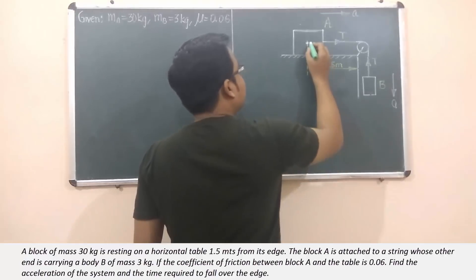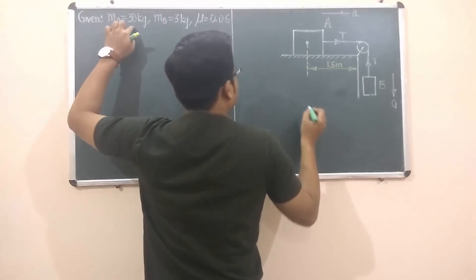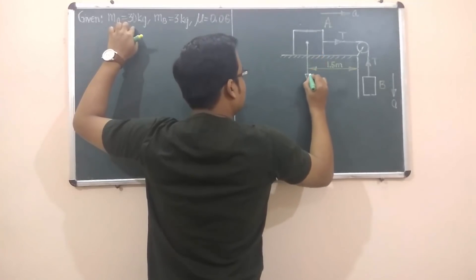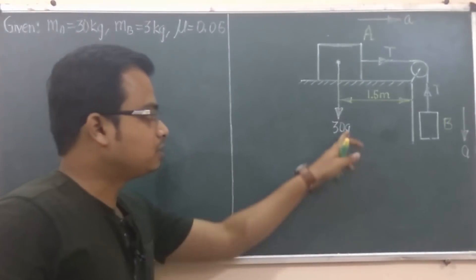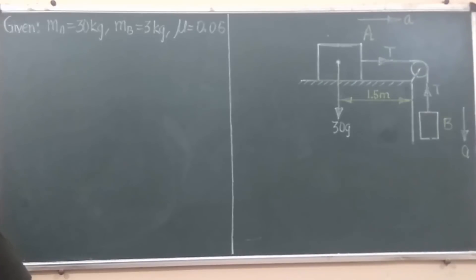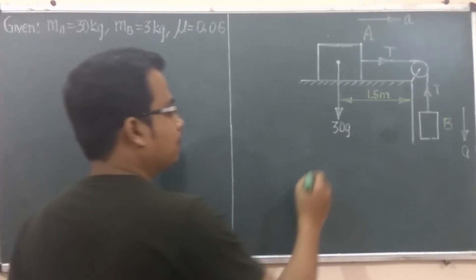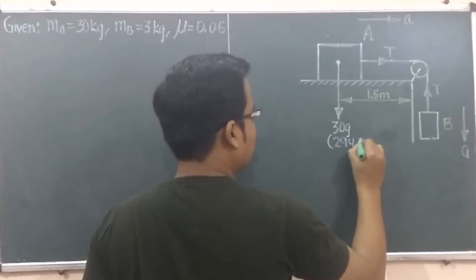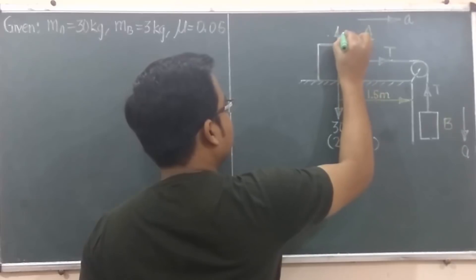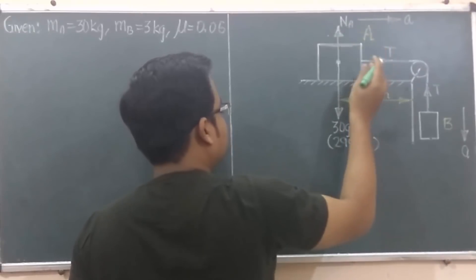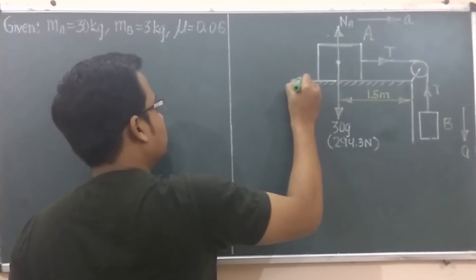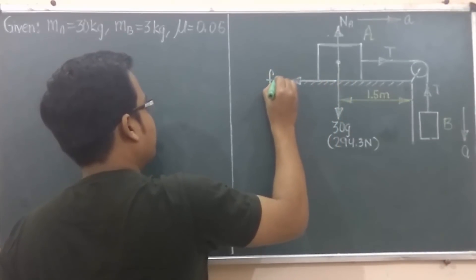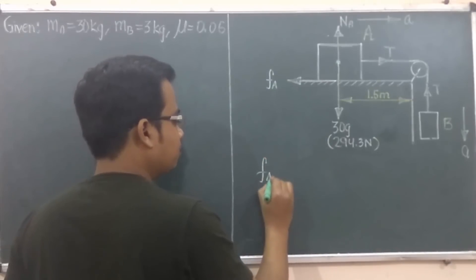As far as this block is concerned, it has a mass of 30 kg, so obviously the weight is going to act in the downward direction, that's 30g. When you multiply 30 with g, that is 9.81, you're going to get 294.3 newtons. Now there is going to be a normal reaction offered from this horizontal surface onto this block A, so this is N_A. Since this is moving in the right-hand side direction, there is going to be a frictional force also.